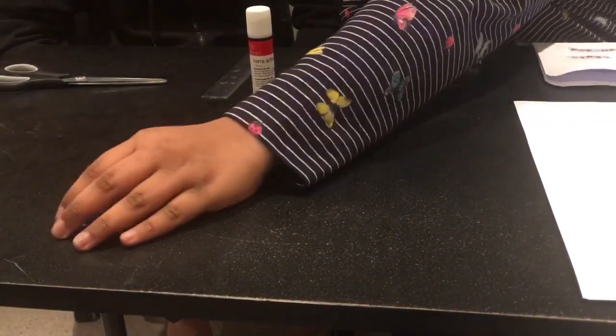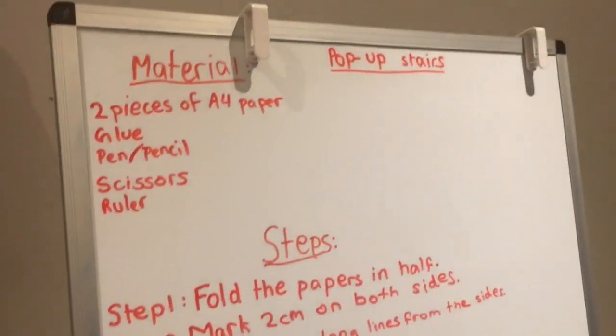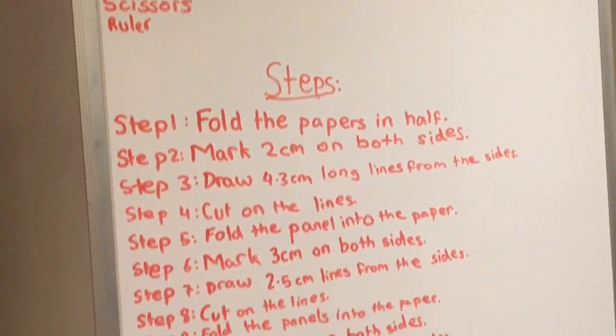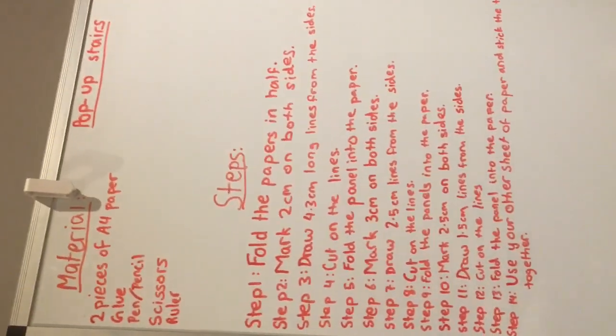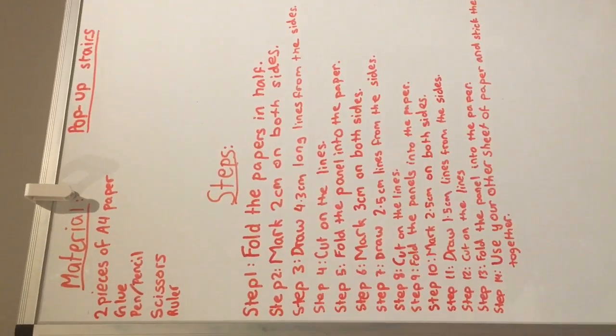You can make the pop-up stairs in 14 easy steps. Step one is to take two sheets of paper and fold them in half.